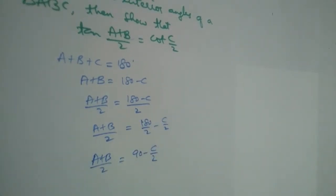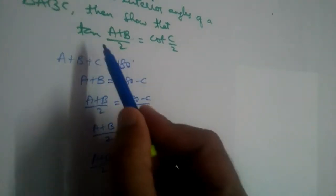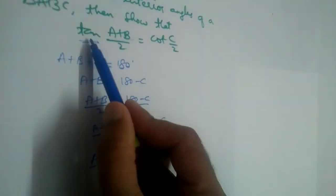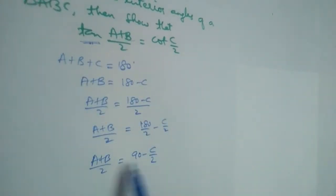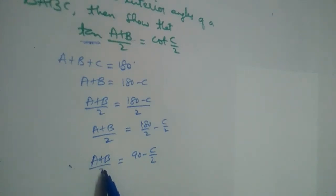Now we should apply this trigonometric ratio on both sides. We have tan in our case. What will happen if you apply tan on both sides? Here this will become tan((A+B)/2) is equal to tan(90 - C/2), right. So tan(90 - C/2) will become cot(C/2).